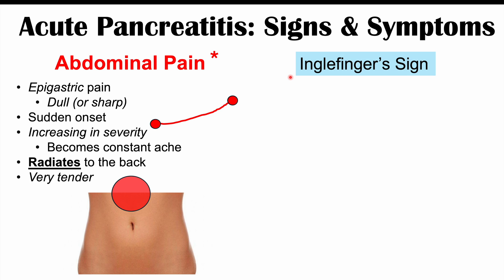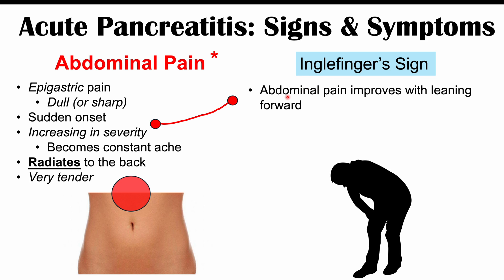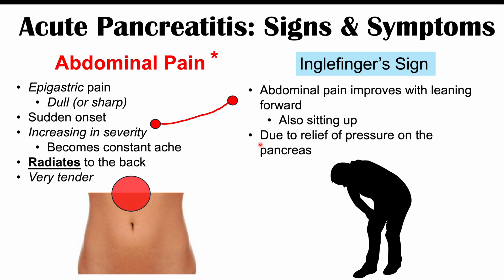Along with the abdominal pain, we can see the angle finger sign, where abdominal pain improves with leaning forward or sitting up. Some patients may even be on all fours to relieve the pain. Leaning forward helps relieve pressure on the pancreas, though this relief is often only temporary. Angle finger sign is an important clinical finding in acute pancreatitis.